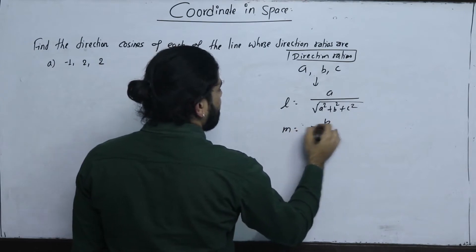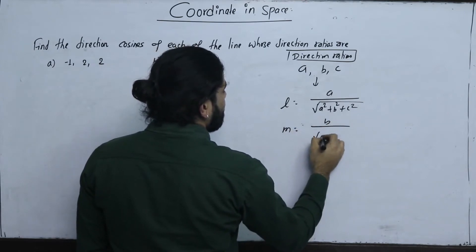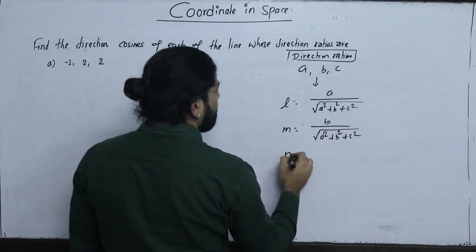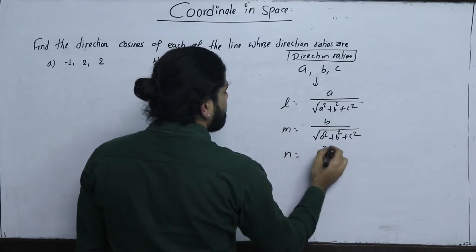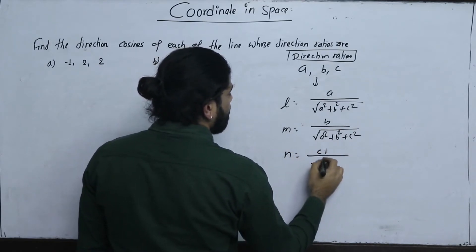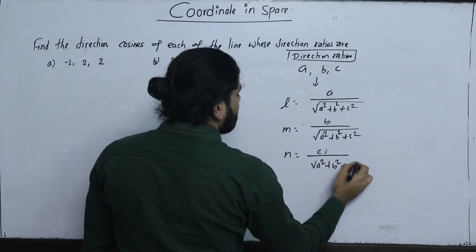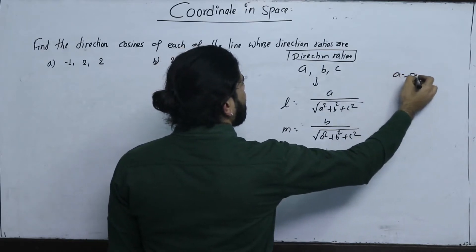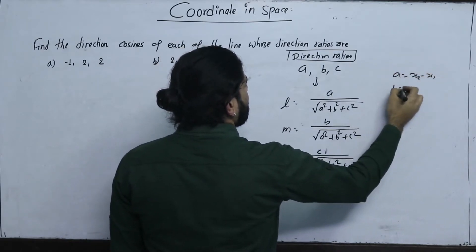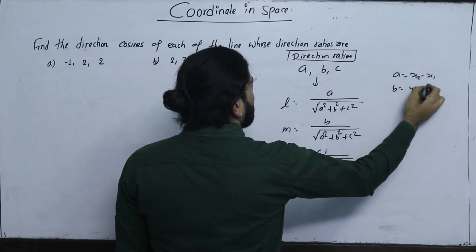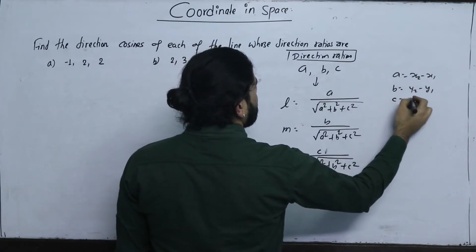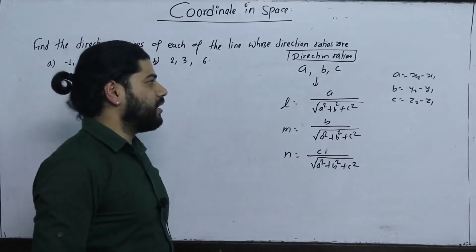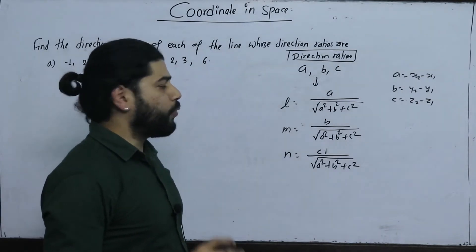We have b over the square root of a squared plus b squared plus c squared, and A is equal to the square root of A squared plus B squared plus C squared. Normally, A is equal to X2 minus X1, B is equal to Y2 minus Y1, and C is equal to Z2 minus Z1. This is the direction of the point.